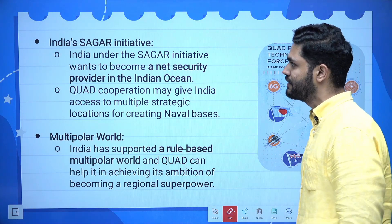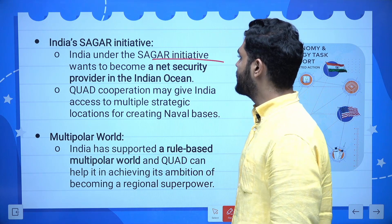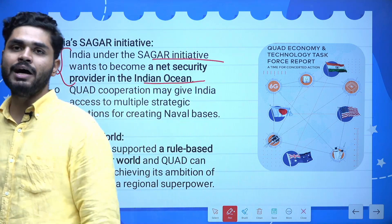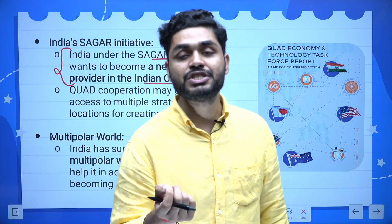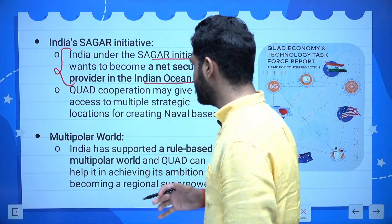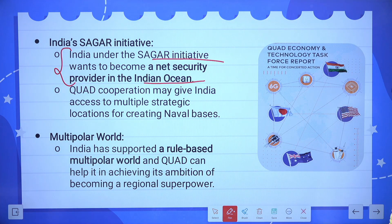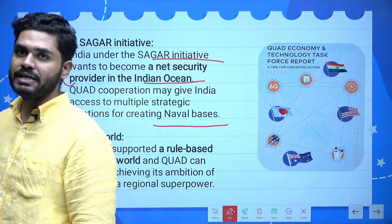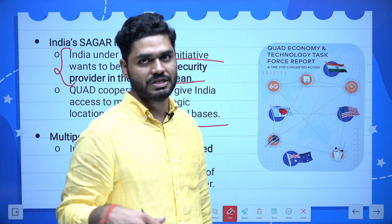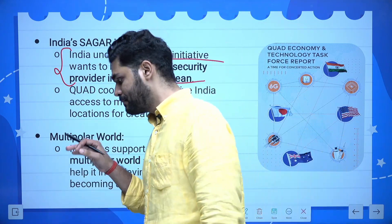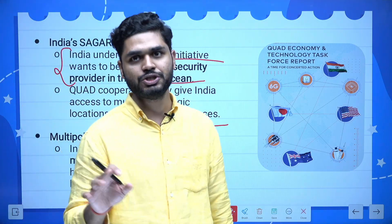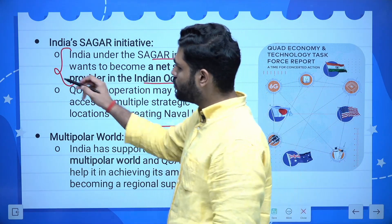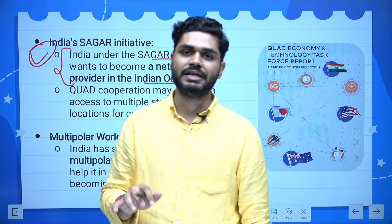India's SAGAR initiative aims for India to become a net security provider in the Indian Ocean. It would be easy for India to join a grouping exclusively focused on this area. Quad cooperation may give India access to multiple strategic locations for creating naval bases — similar to what China has been doing in different parts of the world. By being a member of this group, India would have the advantage to set up naval bases in different parts of the Indo-Pacific, providing both infrastructure and security advantages.